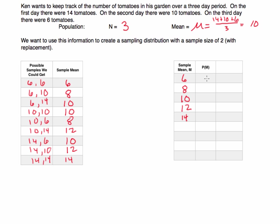The probability of selecting a sample mean of six: there's only one way to get that out of nine total samples, so the probability is one out of nine. The probability of getting eight occurred two times out of nine, so two out of nine. Ten occurred three times, so three out of nine. Twelve occurred twice, so two out of nine. And fourteen occurred once, so one out of nine.